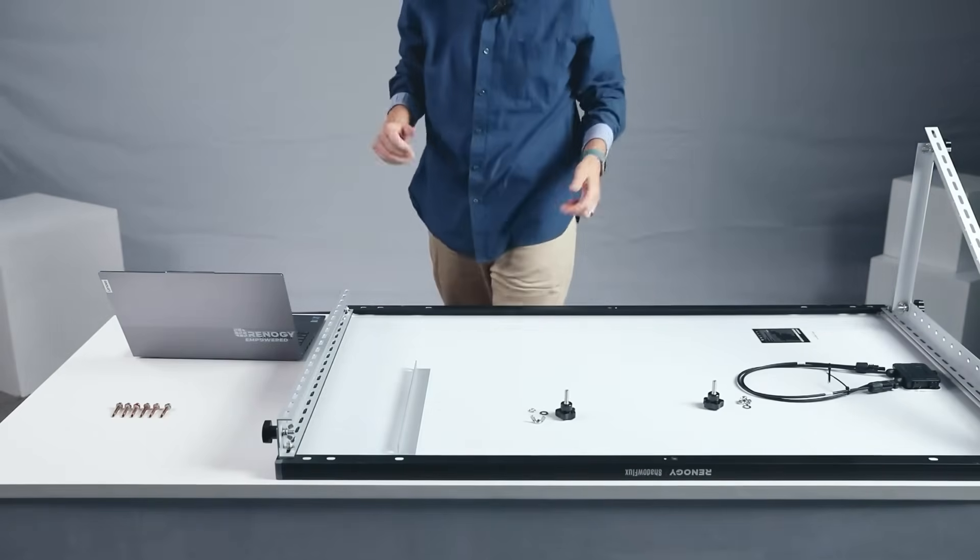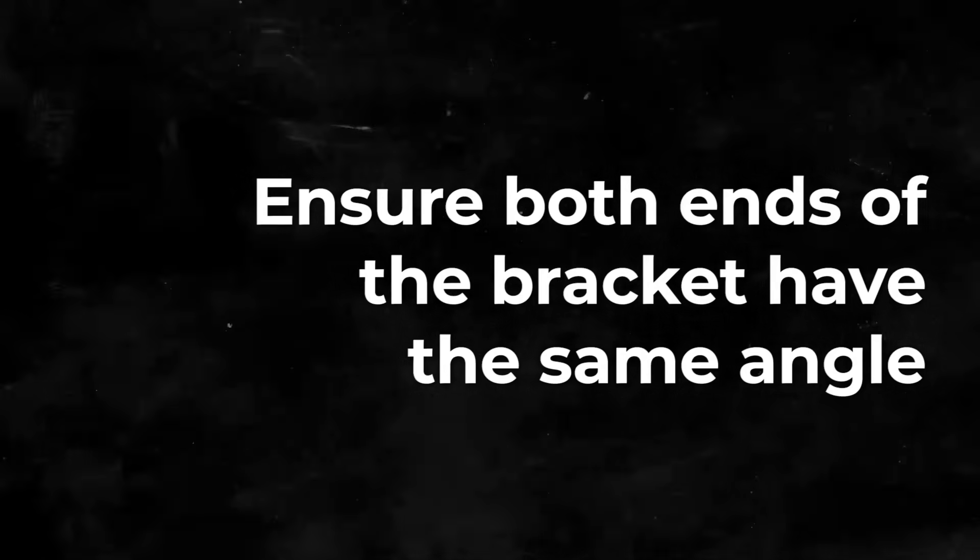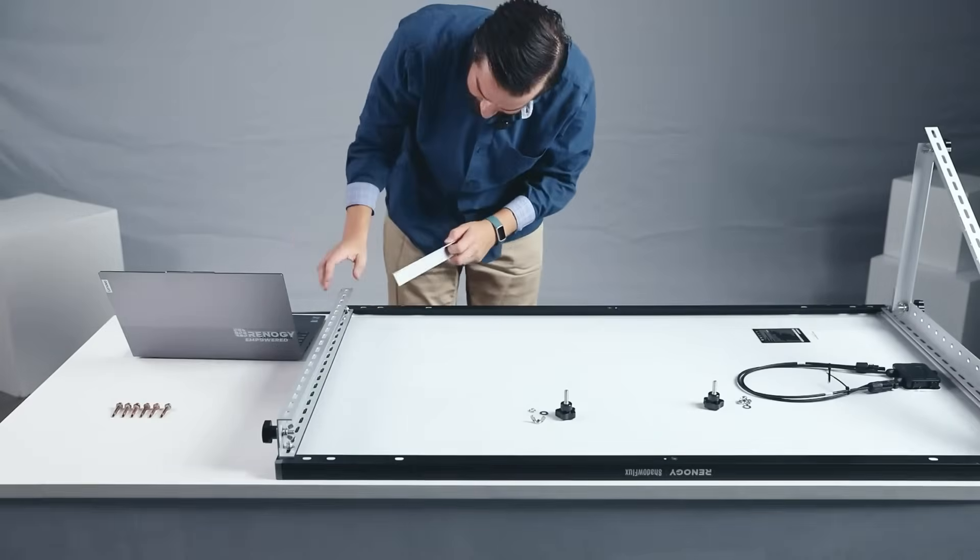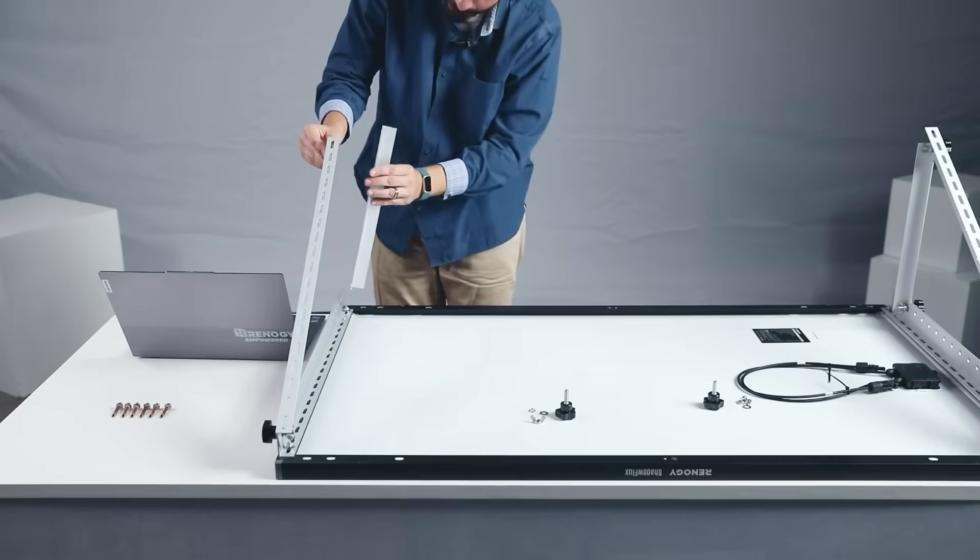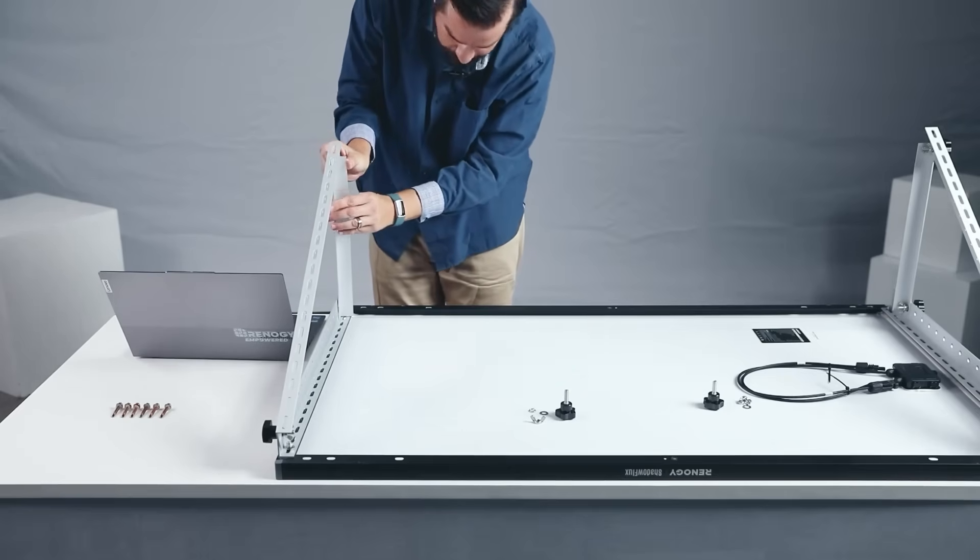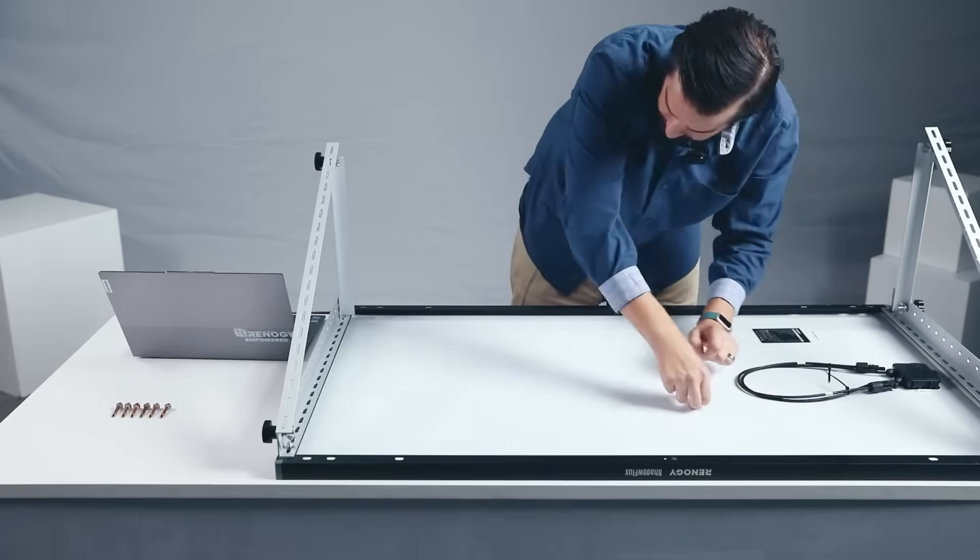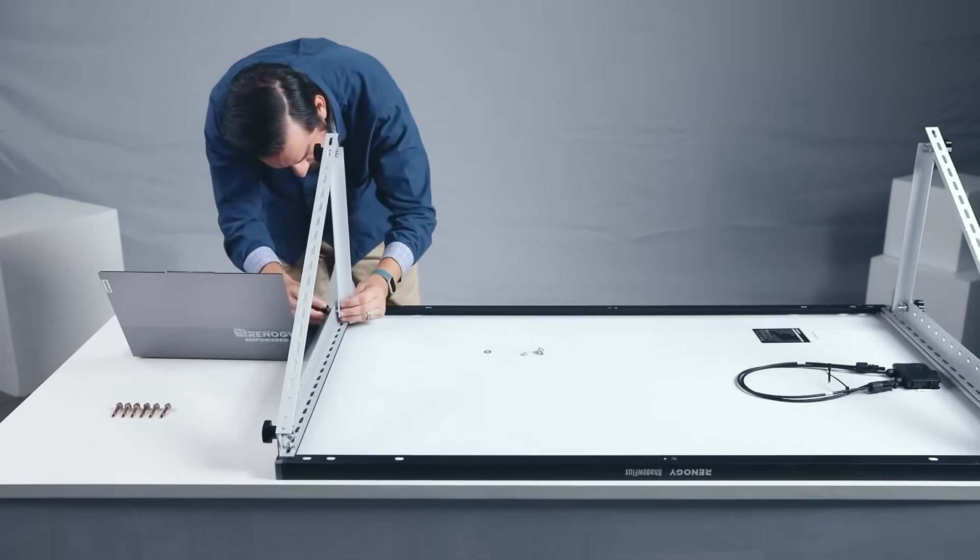There we have one side done, not too bad, right? Now we're going to go ahead and do the second side, and we want to make sure that we're matching the same holes that we did on the first side so both sides are even. So we're going to go like this. We had it on this top one right here, so we did it on the third hole in on that side, so we're going to go ahead and follow that on this side.